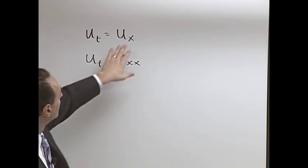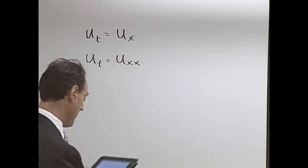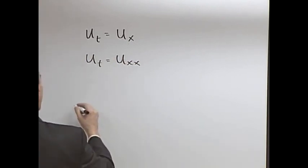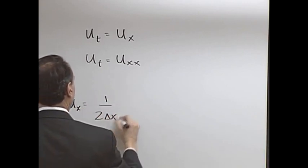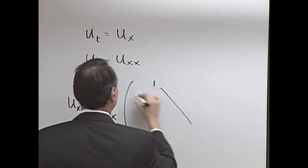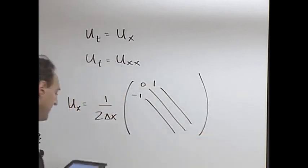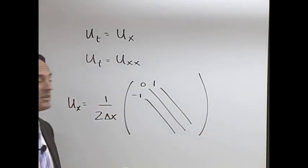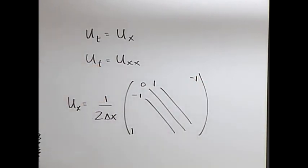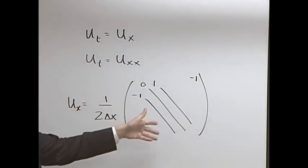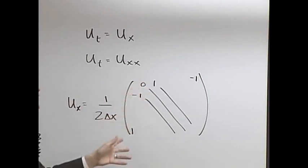Second, since we need derivatives, first derivative or second derivative, remember that we have derivative matrices. Let's make the U of X matrix. One over two delta X, ones, minus ones, zeros. And if we make periodic boundary conditions, I get a minus one here and a one there. This is the first derivative matrix, one dimensional, periodic boundaries.